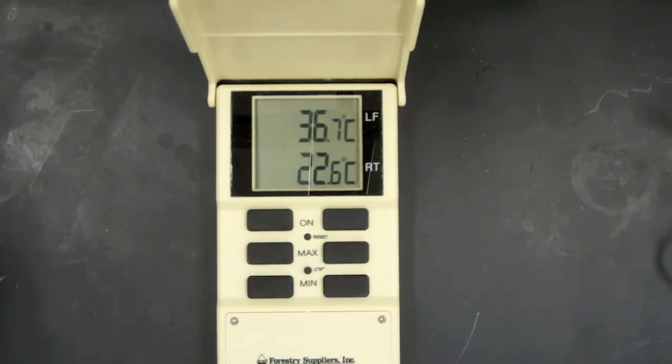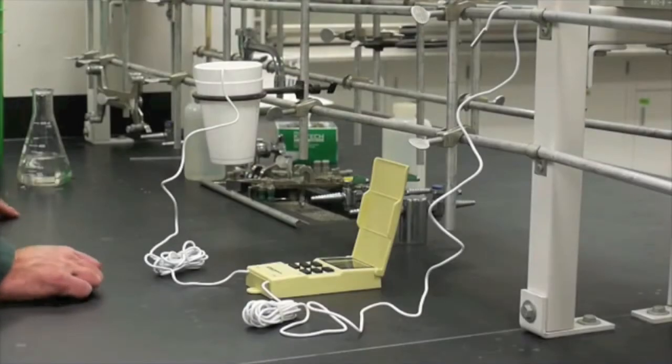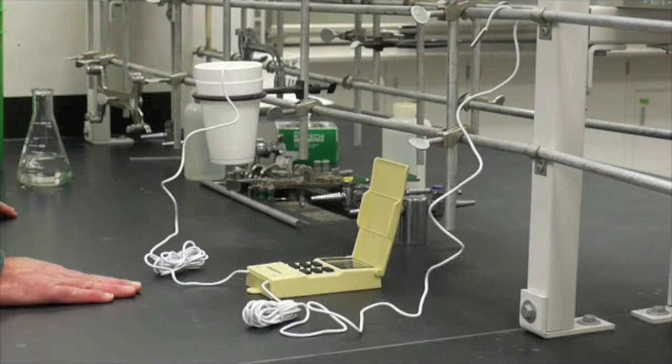Right now, the thermometer is reading 37.2 degrees Celsius in the water. 37.6, 37.8, 37.9. The thermometer has remained constant at 37.9 degrees Celsius in the water, so we will suppose that the thermometer has acclimated to the water and this is the true temperature.